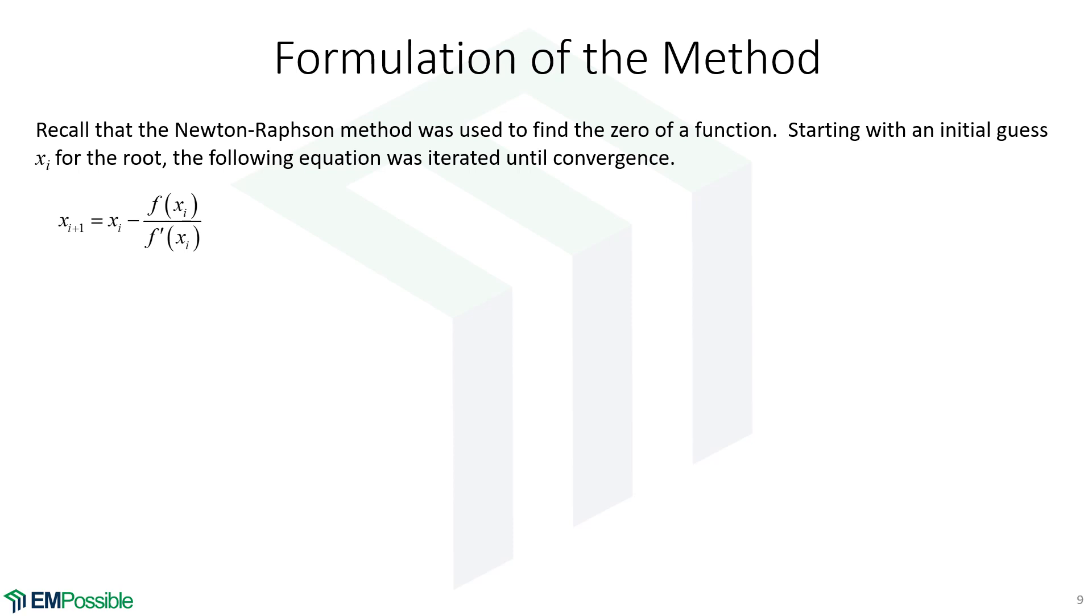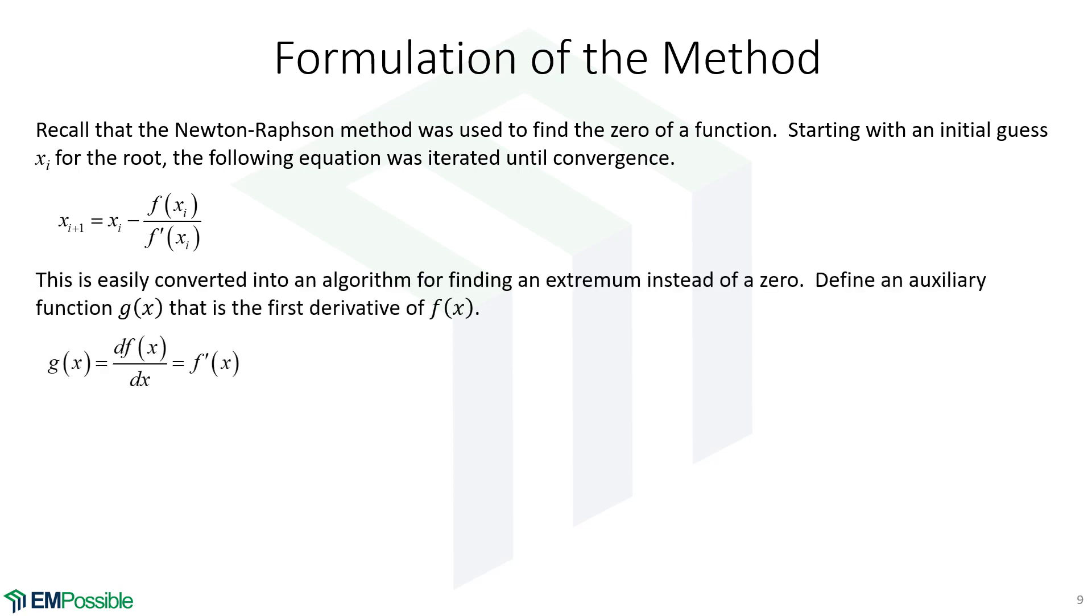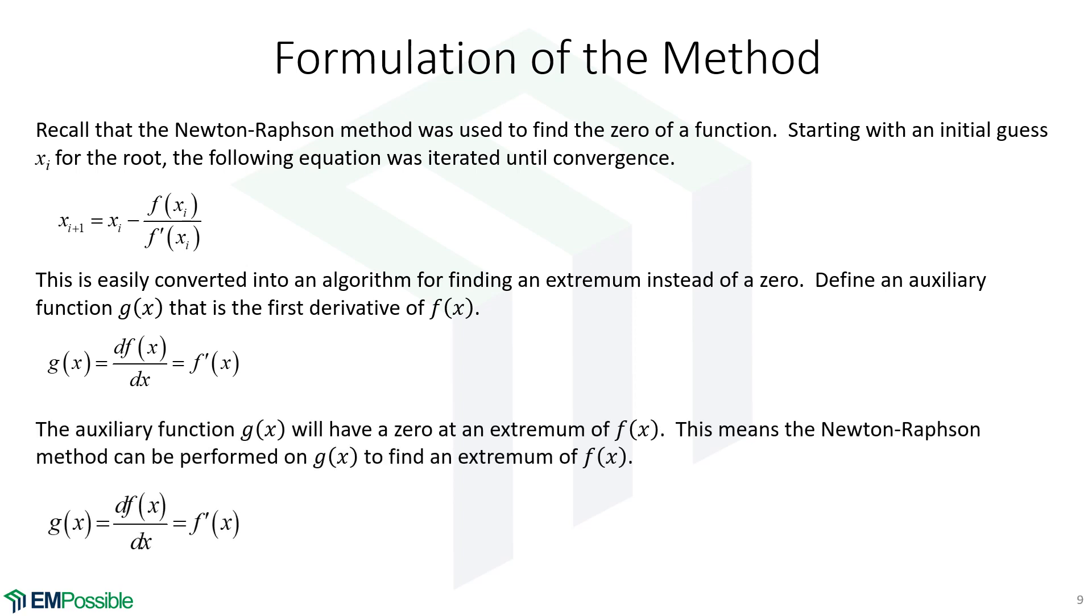So Newton's method is a twist on this to find extrema. So we're going to calculate an auxiliary function, call it g of x, which is the derivative of f. Remember from the first derivative test, what happens at an extrema? The first derivative goes to zero. So we are actually now, by using a root finding algorithm on the first derivative of a function, we're finding an extrema with a root finding algorithm. And so that's how the Newton's method works.